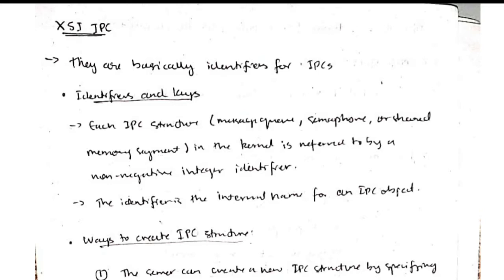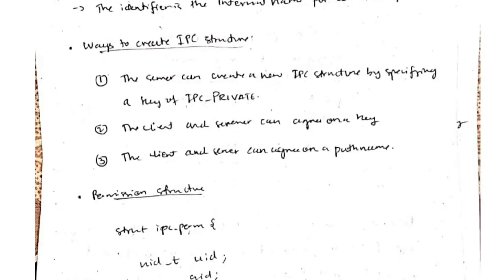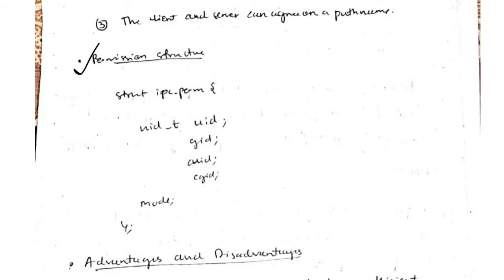The ways to create the IPC structure are three: either we can use the private key, the client and the server can agree on a key, or on a path name. These are the ways to create.